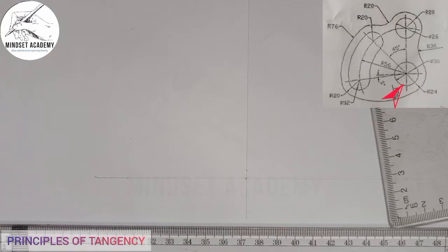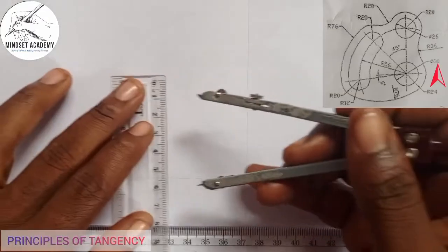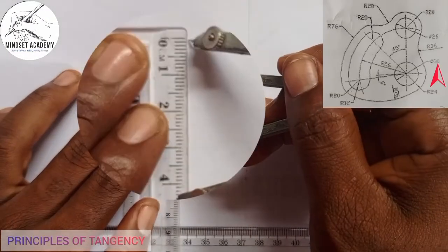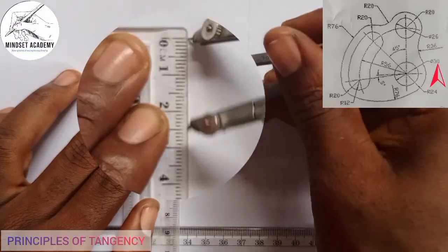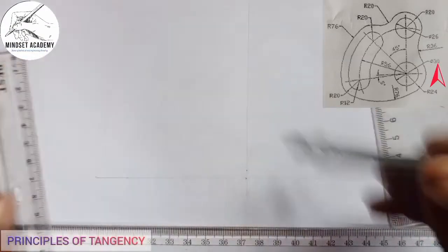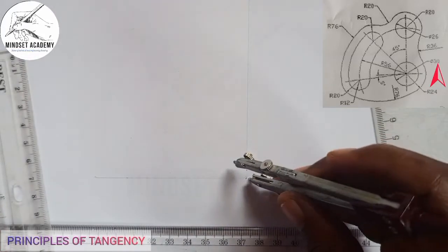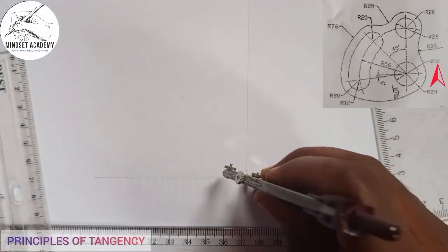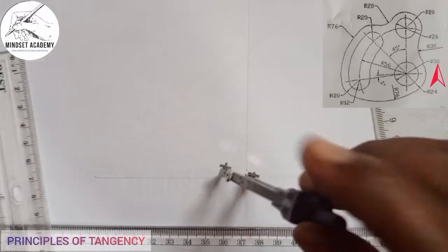The first circle has a diameter of 30, so we need the radius to draw it. Half of 30 gives us 15. I'll take my compass and measure 15 millimeters on my ruler. I'll come to the center point where the lines meet and draw the circle.